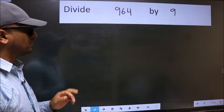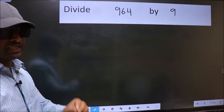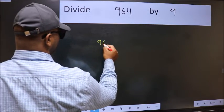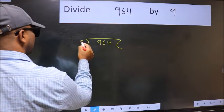Divide 9.64 by 9. To do this division, we should frame it in this way. 9.64 here and 9 here.